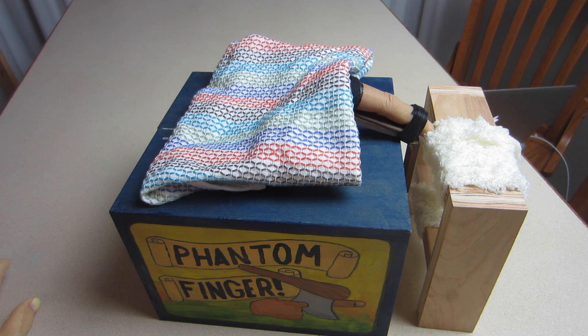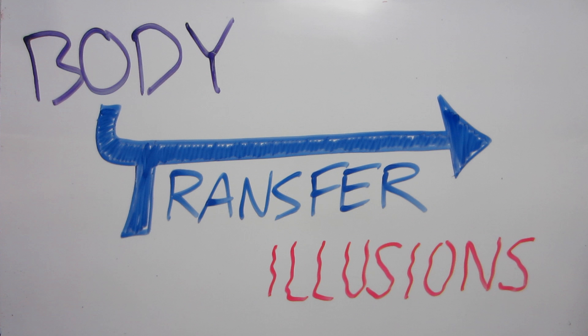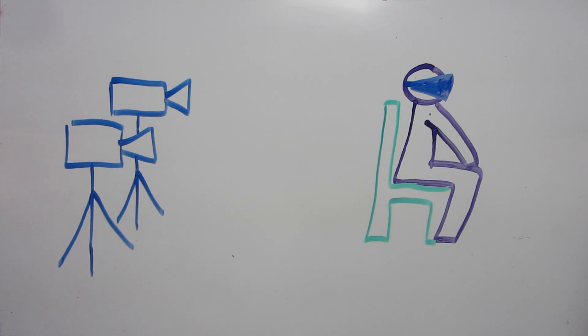In what's perhaps the most extreme version of these so-called body transfer illusions, researchers have actually managed to produce a full out-of-body experience in the lab. They had subjects wear virtual reality headsets, showing live footage from two cameras placed a few feet behind them, one camera for each eye.